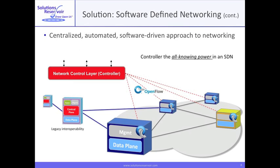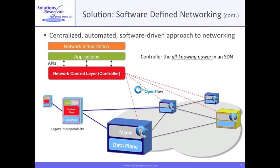The applications layer in SDN interfaces with the control layer via APIs. While the control vendor will supply many applications, using APIs an entity could write applications for special needs. For example, this is how a computer science department could define and carve out a virtual network to test a new protocol. The network is presented to a user on a virtual basis, and we'll see how that simplifies things.